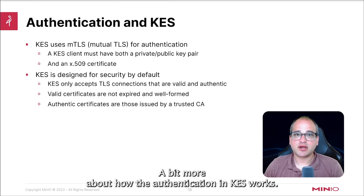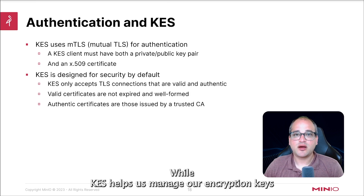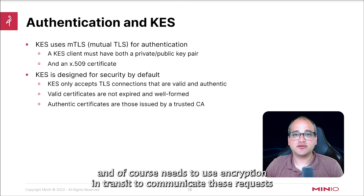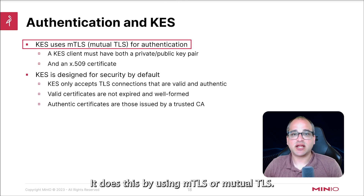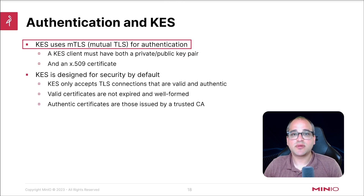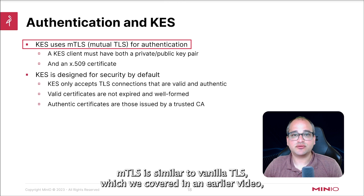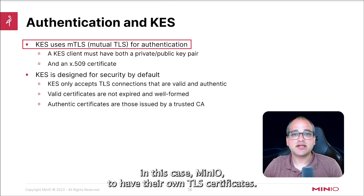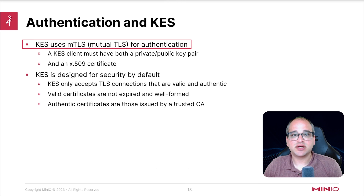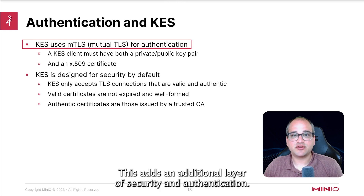A bit more about how the authentication in KES works. While KES helps us manage our encryption keys, it needs to use encryption in transit to communicate these requests and responses between itself, MinIO, and the KMS. It does this by using MTLS, or mutual TLS. MTLS is similar to vanilla TLS, which we covered in an earlier video, but adds a requirement for both the server and the client, in this case MinIO, to have their own TLS certificates. This adds an additional layer of security and authentication.